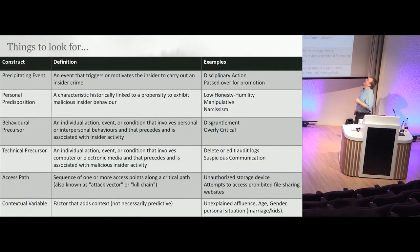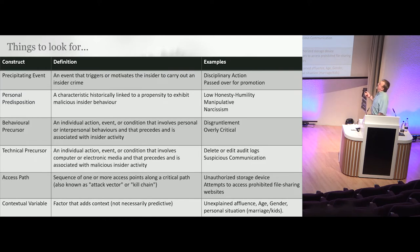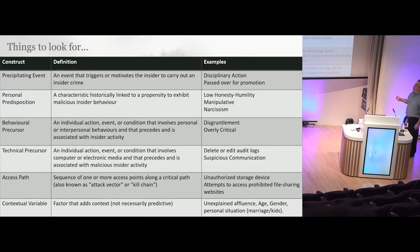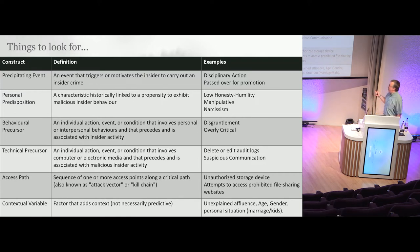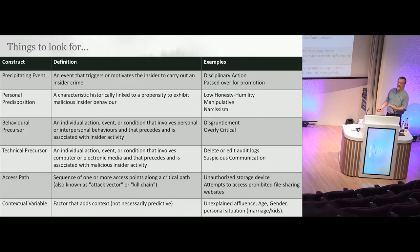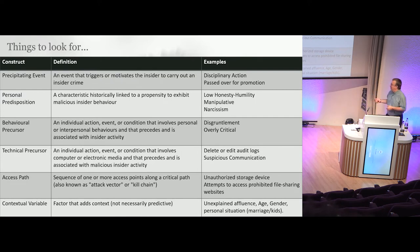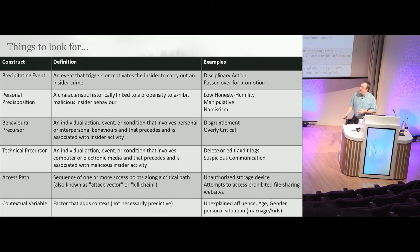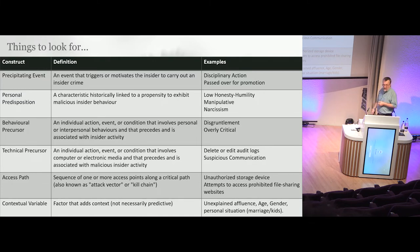Things to look for: precipitating events might be disciplinary action. Low honesty or manipulativeness — narcissism is a big one to watch. Disgruntlement comes with overly critical behaviors. You then start to see some technical precursors. You may start to see access path changes, installation of non-sanctioned software, backup software — these are key for threat actors to pull your data and take it to a new employer. You may also see unexplained affluence — if you see them driving a brand new car and their wage doesn't add up, you may want to start asking questions.